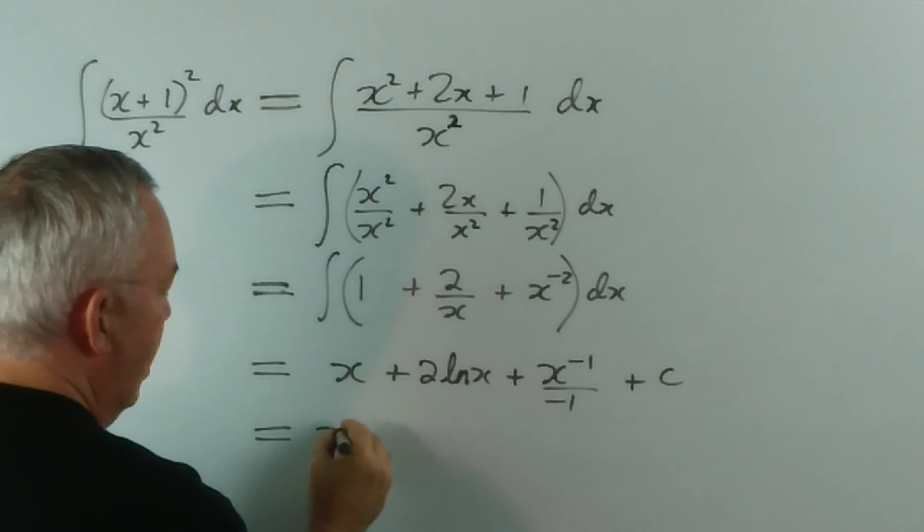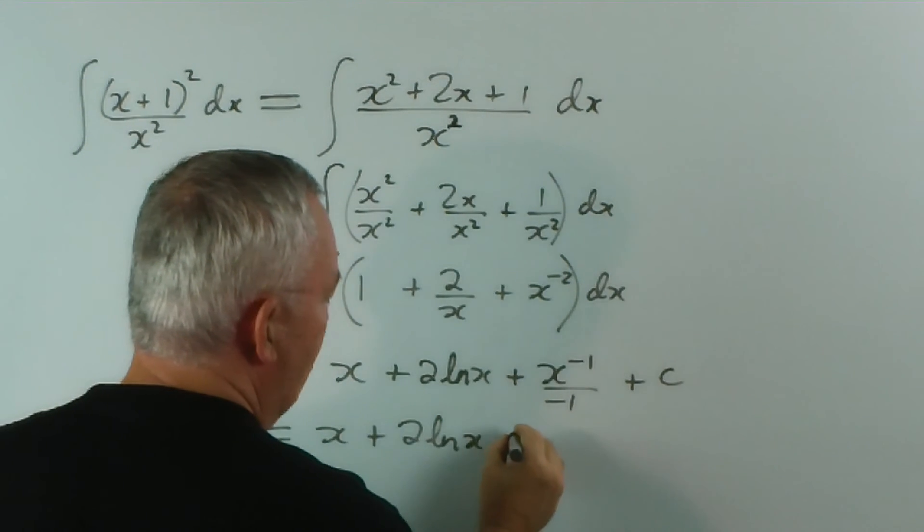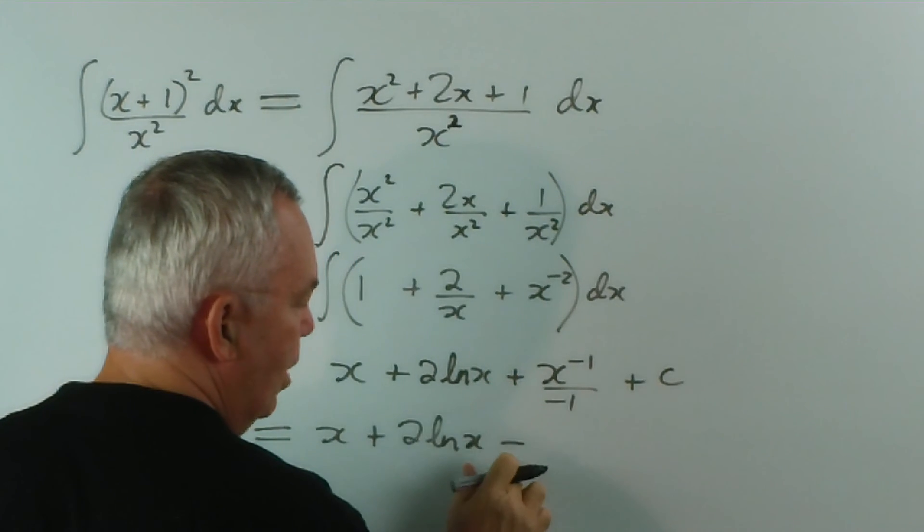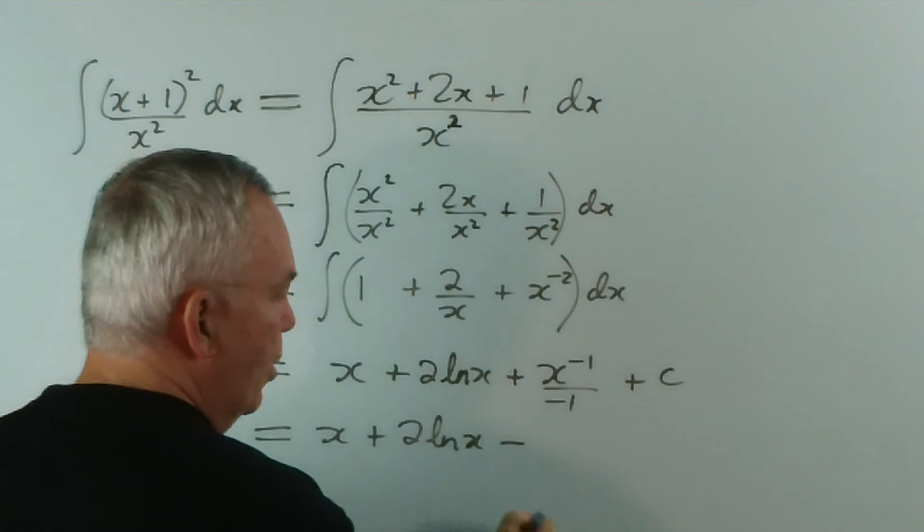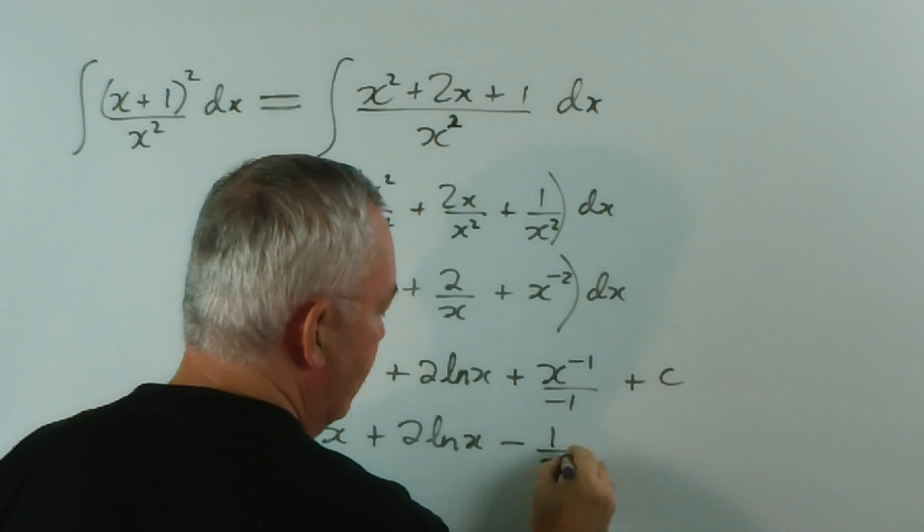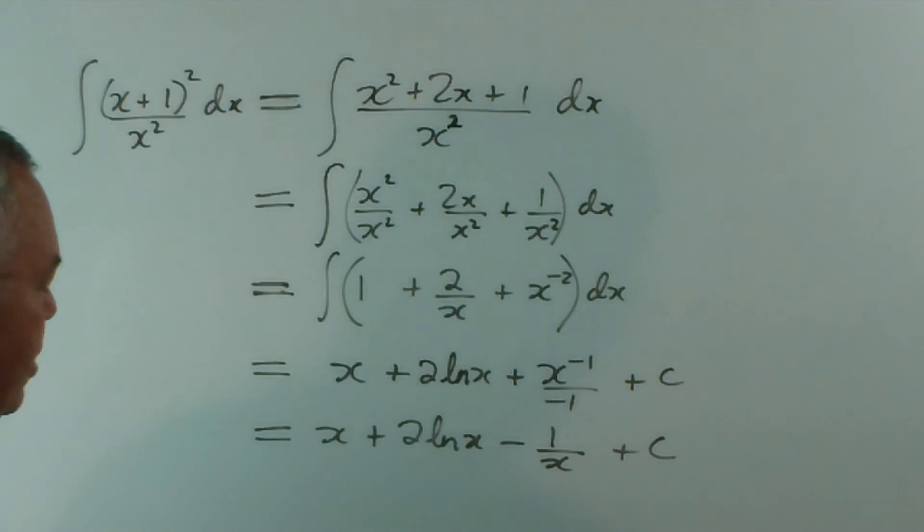And if we tidy that up, we get x plus 2 log x minus, because we have a positive over a negative is minus, we don't need the 1 on the bottom. And x to the minus 1 we can write as 1 on x. And that would be a nice, complete solution.